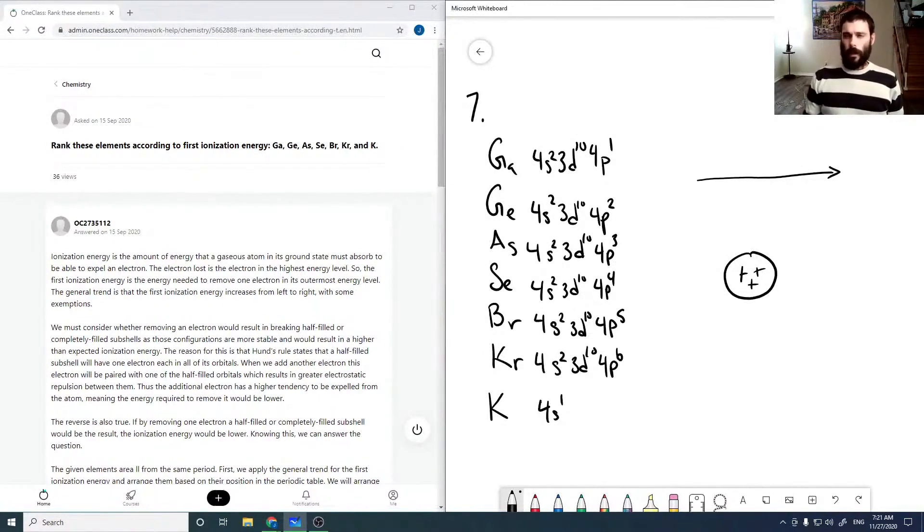The only thing that alters this is we get a little bit of stabilization for a half-filled orbital. So the only case this comes in is arsenic. And for filled orbitals, which is krypton. But of course, krypton's a noble gas, so it's on the far right of the periodic table. So it still kind of follows that trend.